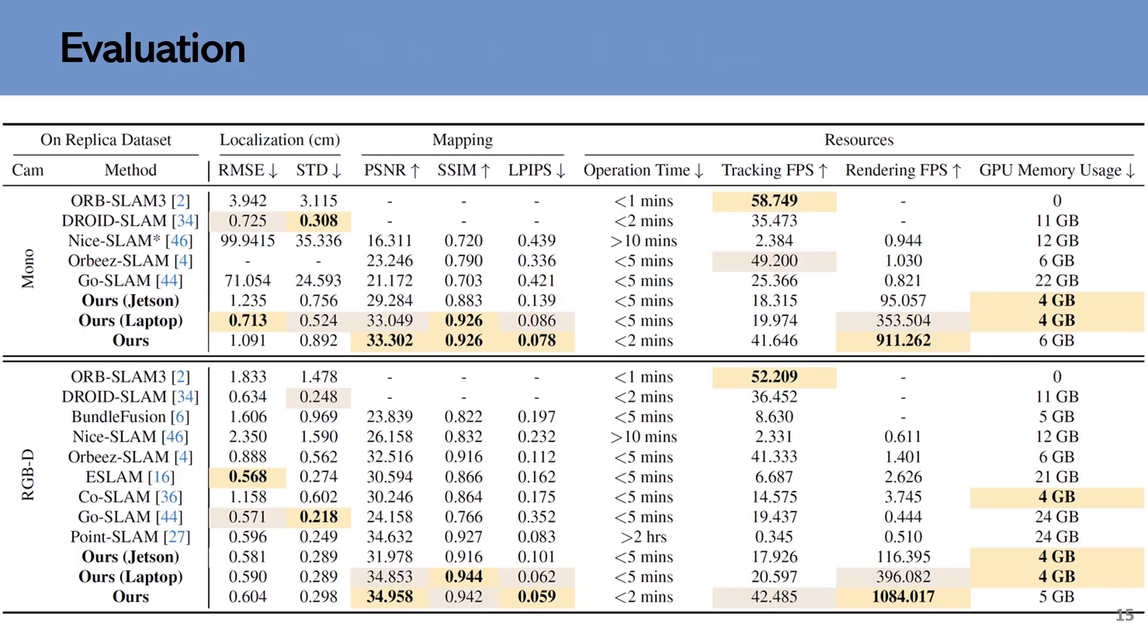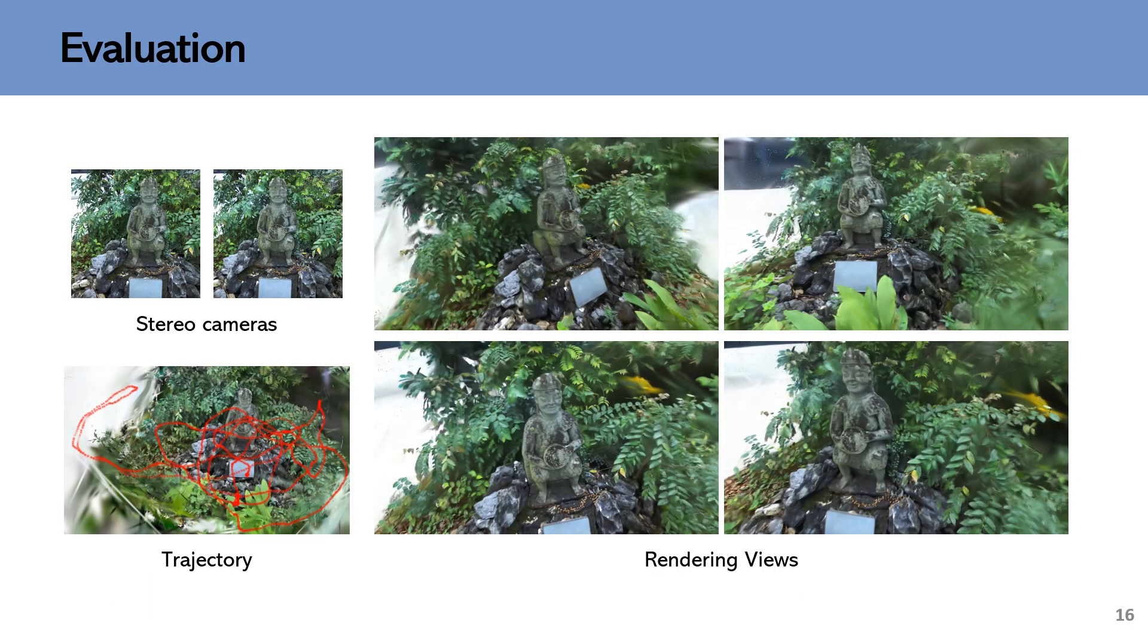PhotoSLAM can estimate the camera poses in real-time with high fps and achieves top performance on photorealistic mapping. It is compatible with stereo cameras and achieves decent results in unbounded outdoor scenes which are captured by a handheld stereo camera.